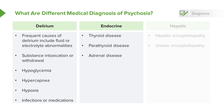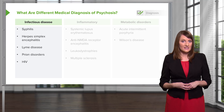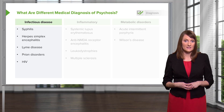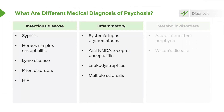Also think about endocrine problems such as thyroid disease, parathyroid, or adrenal disease. The liver can also present with psychotic symptoms, so consider hepatic encephalopathy and uremic encephalopathy. Other medical causes to rule out include infectious diseases like syphilis, herpes, Lyme disease, prion disorder, and HIV or AIDS. Inflammatory disorders like lupus, anti-NMDA receptor encephalitis, leukodystrophies, and multiple sclerosis, as well as metabolic disorders like porphyria or Wilson's disease.